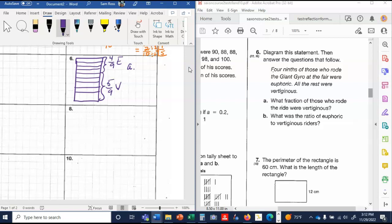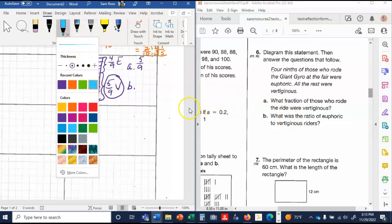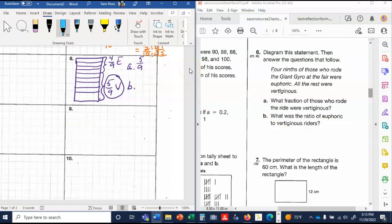So A says, what fraction of those who rode the ride were vertiginous? Well, that's right here. Five ninths were vertiginous. And then B says, what is the ratio of euphoric to vertiginous? So I'm going to take this number and this number. This would be for the euphoric. This would be for the vertiginous. And if you wrote anything like four to five, four colon five, I counted it right. You need to make sure that you write the appropriate one of these down if you only missed part of this answer.